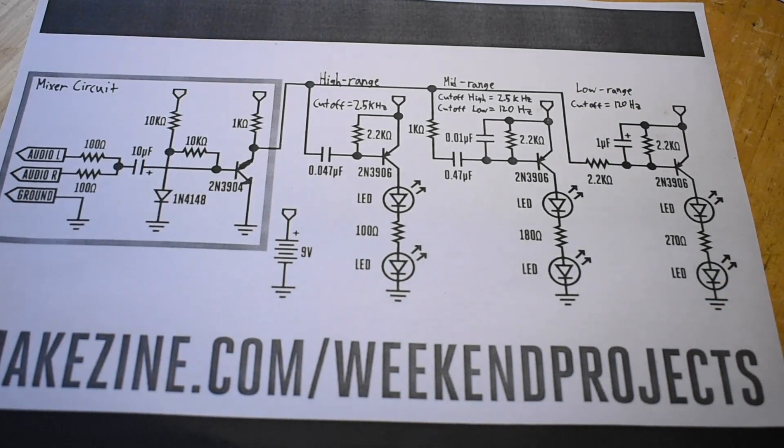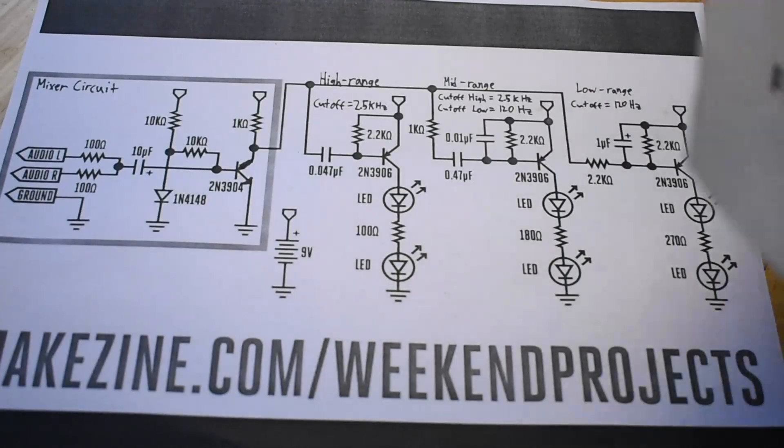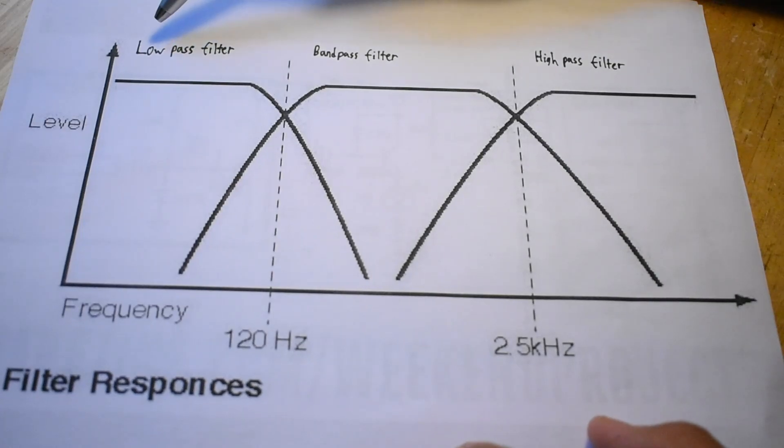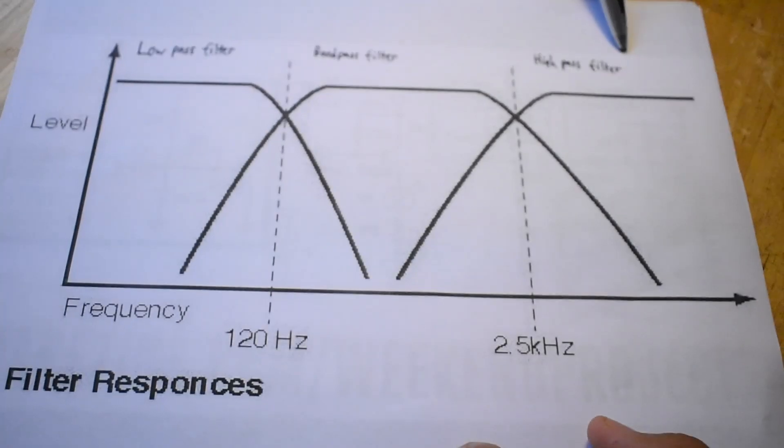This filtering action can be better seen in this graph. As you can see, this is the low pass filter, band pass filter, which is the mid range, and the high pass filter. In the low pass filter, anything below 120 Hz is allowed to pass, and then anything above it will slowly decay.